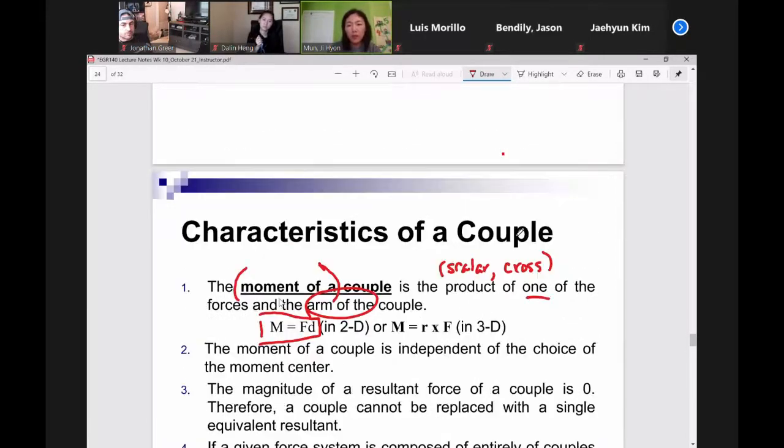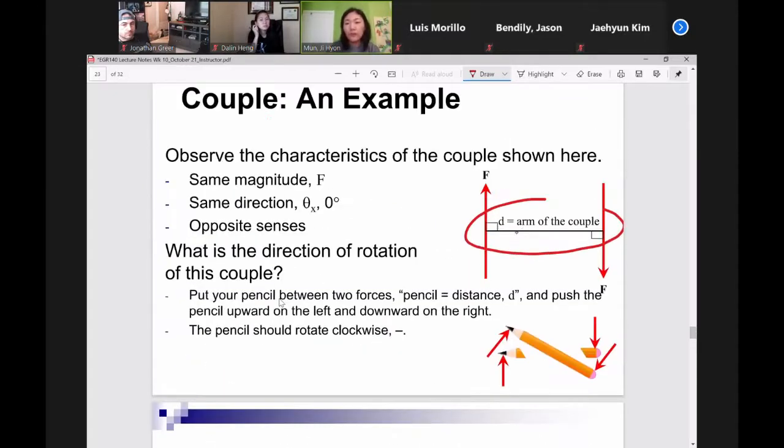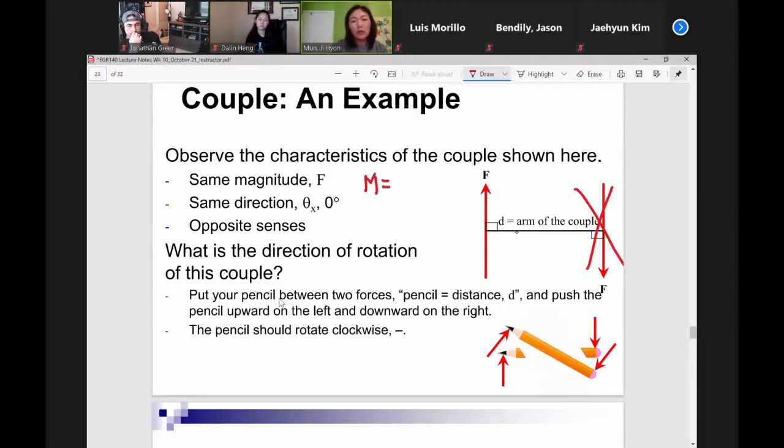But notice that it says one of the forces and the arm of the couple. So let me go back to the picture that we have here. So if I choose - and it doesn't matter which force you choose, you can choose either the force on the left hand side or the right hand side. Let's say that, I don't know, I'm going to ignore this one, the one on the right. Okay, so if I take the moment of the couple, I just take the magnitude of this one force. It doesn't matter because they have the same magnitude, right? It doesn't really matter.